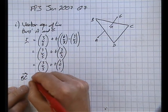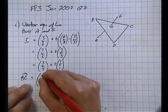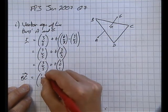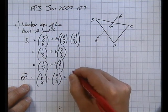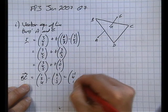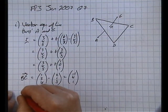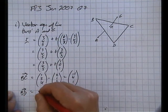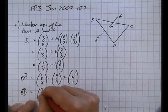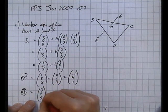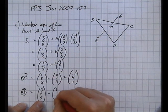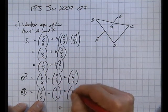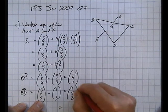So the vector BC is going to be (1, 5, 4) subtract (2, 1, 3). That's going to equal (-1, 4, 1). And the vector BD is going to be (3, 6, 5) subtract (2, 1, 3), which is (1, 5, 2).